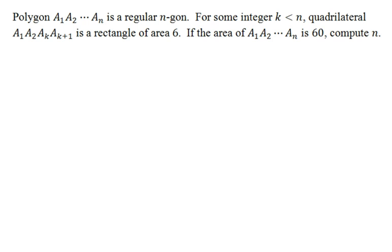Here is a view of the problem. Polygon A1, A2 all the way to AN is a regular N-gon. For some integer K less than N, quadrilateral A1, A2, AK, A sub K plus 1 is actually a rectangle with a given area. If we also know the area of our initial polygon, compute the value of N.